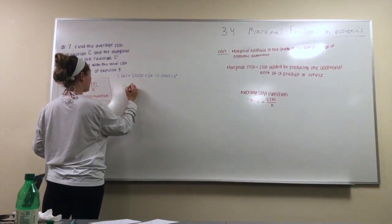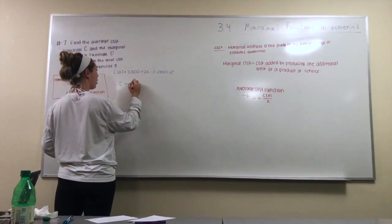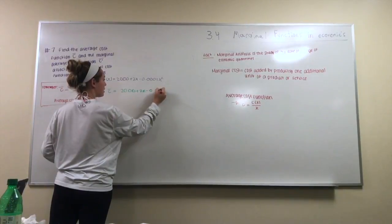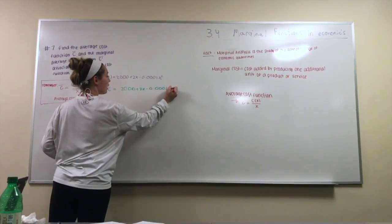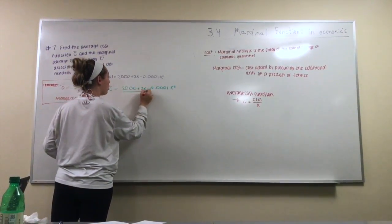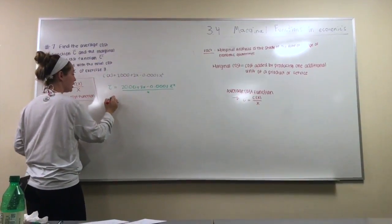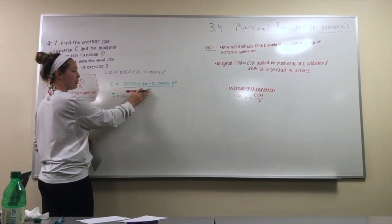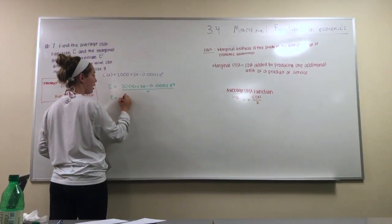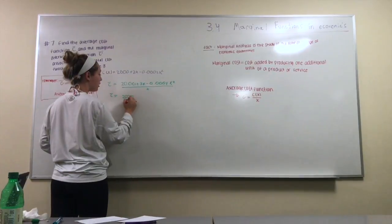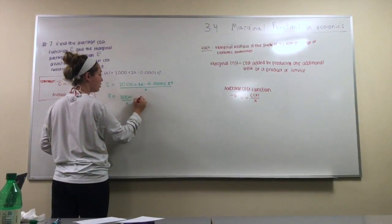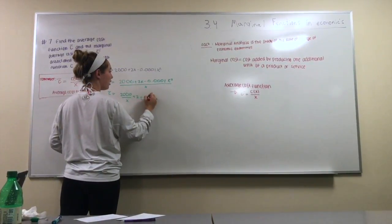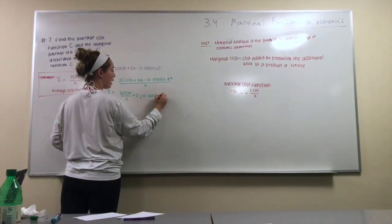So we know that C(x) is this equation so you can go ahead and plug that in. So 2,000 + 2x - 0.0001x² and that is all over x. So now after this step, basically what you're doing is taking out the x from the bottom so it'll end up being 2,000/x minus 2, just minus 2, minus 0.0001x.